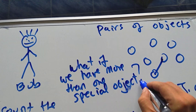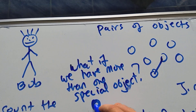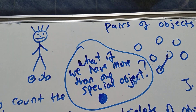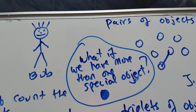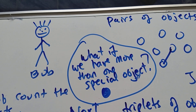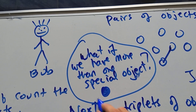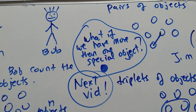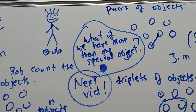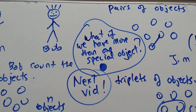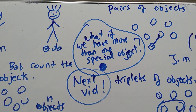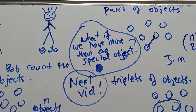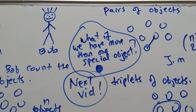What if we have more than one special object? That's the next video. If you like this, click like and subscribe, and hang on for more combinatorial arguments.